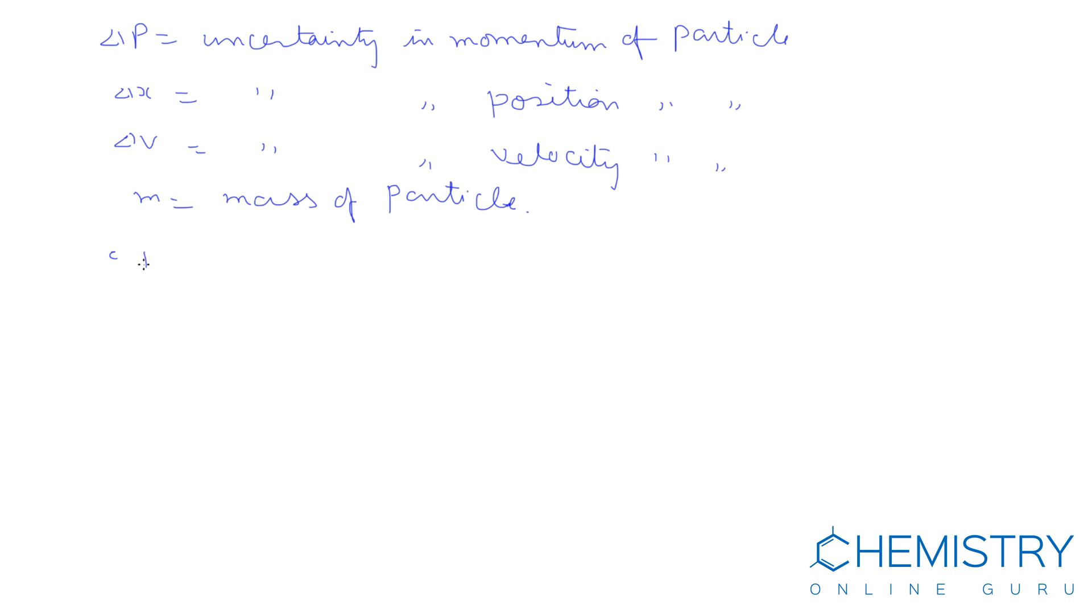We can say the product of uncertainty in momentum, that is delta p, and uncertainty in position, that is delta x, is equal to or greater than h upon 4 pi.